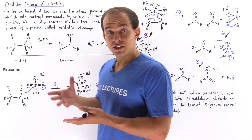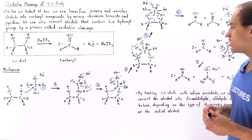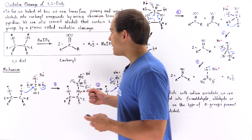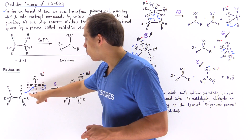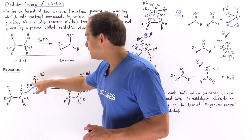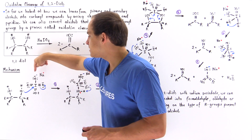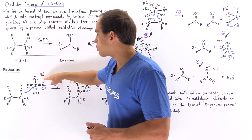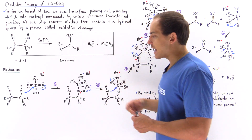An intermediate in this reaction includes a five-membered ring, as we'll see in just a moment. Sodium periodate has the following structure: four oxygen atoms attached to the iodide, with three of these oxygens double-bonded. One has a single bond bearing a negative charge, and sodium attaches to it via electrostatic forces.